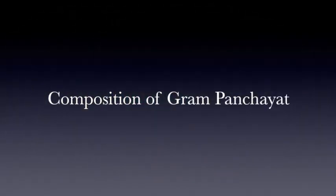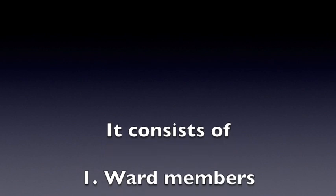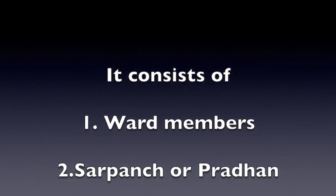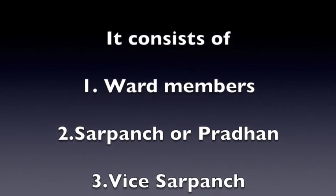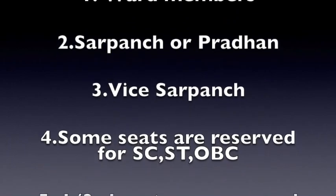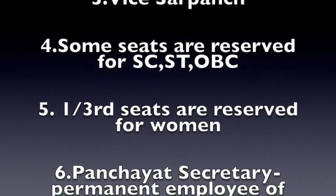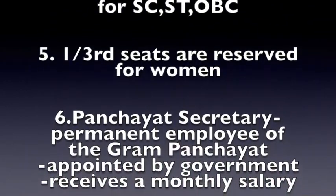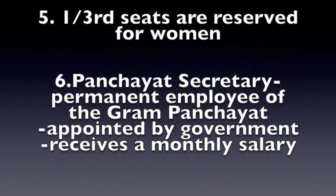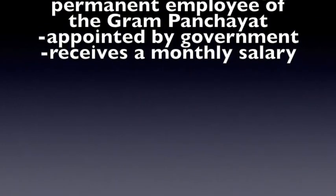What is the composition of Gram Panchayat? It consists of: 1. Ward members, 2. Sarpanch or Pradhan, 3. Vice Sarpanch, 4. Some seats are reserved for Scheduled Castes, Scheduled Tribes, and backward classes, 5. One-third of seats are reserved for women, 6. Panchayat secretary, who is a permanent employee of the Gram Panchayat, appointed by the government and receives a monthly salary.